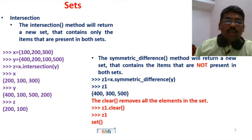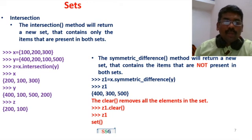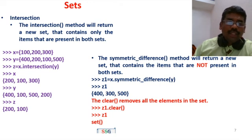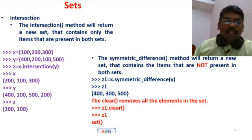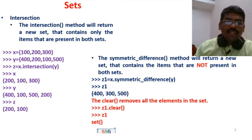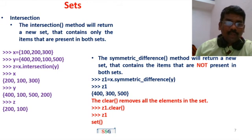The clear() method removes all the elements from a set. For example: Z1.clear() removes all elements from Z1. After calling clear, Z1 becomes an empty set with no data.